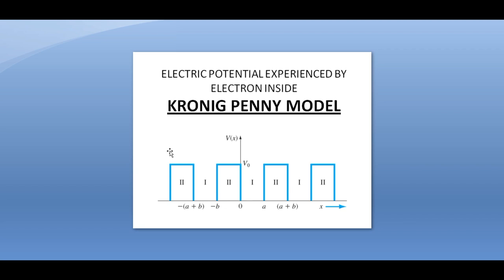Initially, in the quantum free electron theory suggested by Arnold Sommerfeld, they considered only the barriers at the edges of the metal. If you imagine the box as a metal, only on the right and left edges were there barriers; inside everywhere it was free, so electrons could move anywhere. But that was not applicable to all kinds of solids. To extend it to insulators and semiconductors, the only way is to introduce these internal barriers.